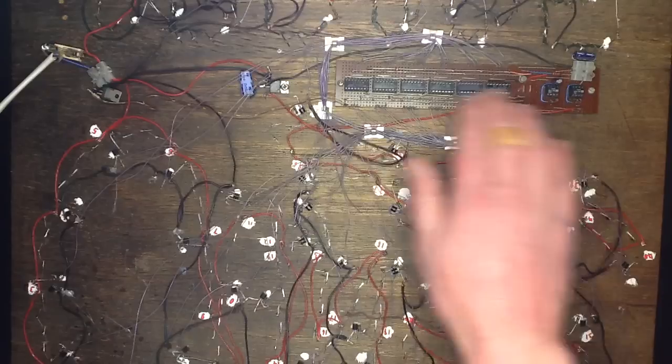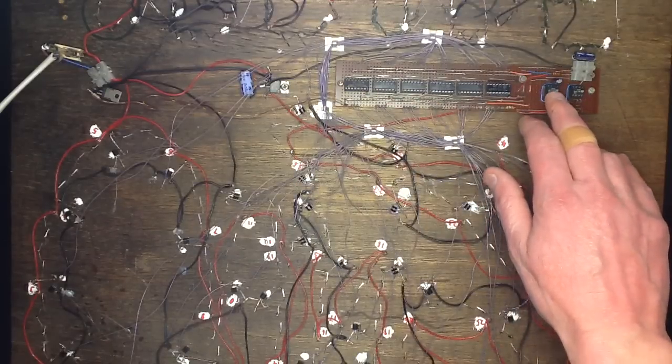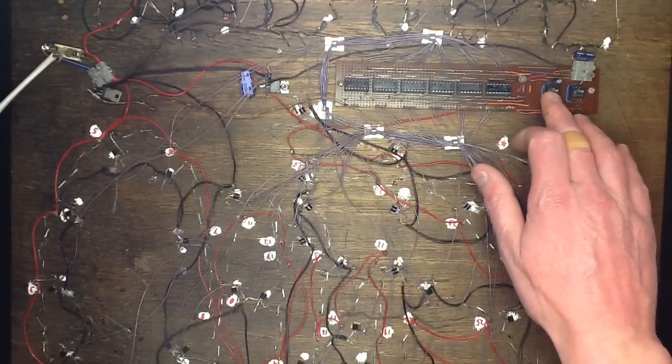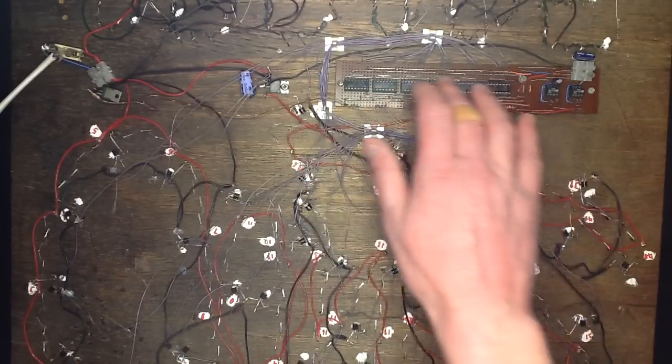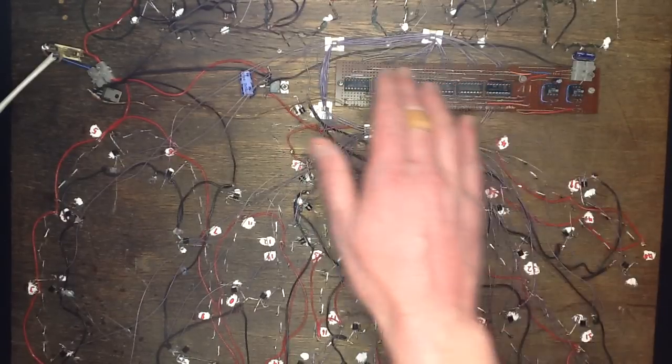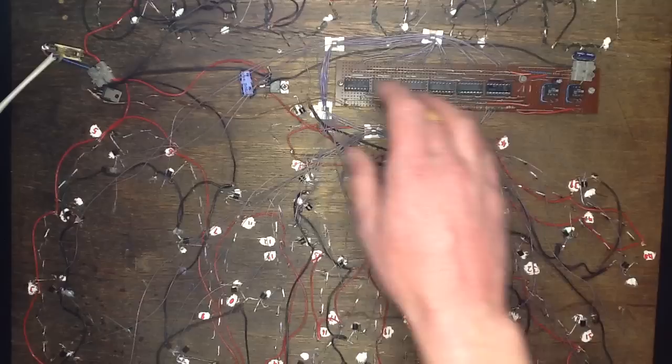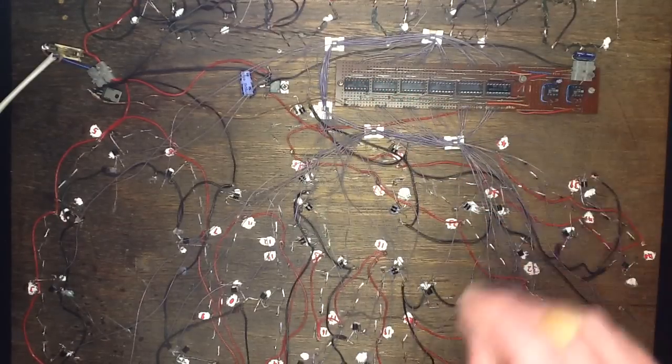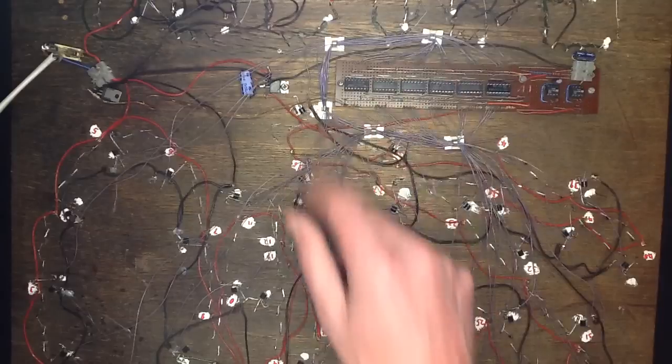And driving the shift register is a 555 timer, which there's two of them. One provides the clock pulse to the processors, the shift registers, which actually chases the logic one along them. And the other one is used to reset it. And that's the point that the display blanks and then starts again.